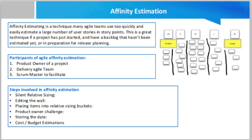The next step is editing the wall. Team members add the relative sizes on the wall. This step involves discussion between the product owner and the team, and the leader can optionally rearrange the order decided in the first step based on their discussion. The wall refers to any physical wall where the stories are placed.